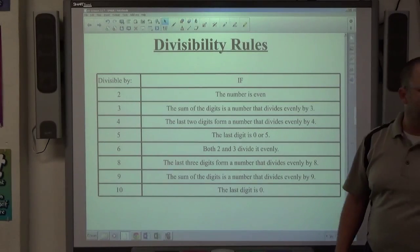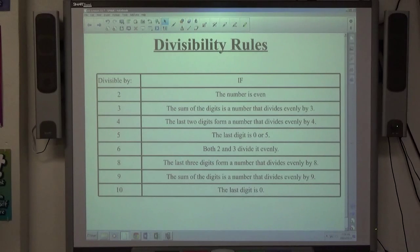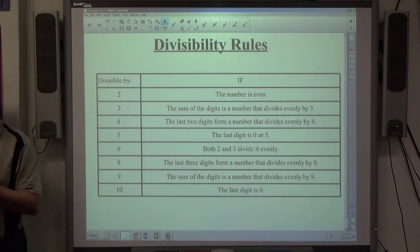Okay, real quick, if you take a look up at the board at the divisibility rules for numbers 2 through 10, not including 7. This is just a real quick check to see if numbers divide by certain numbers.